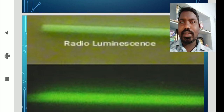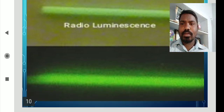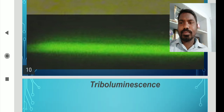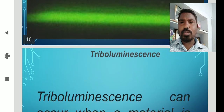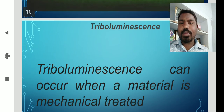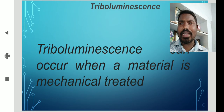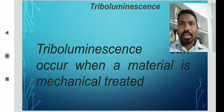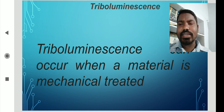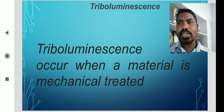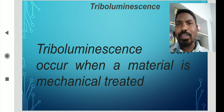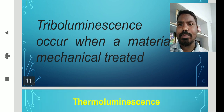Triboluminescence can occur when a material is mechanically stressed or fractured. When an object is mechanically stressed, it produces a certain type of luminescence, and that luminescence is called triboluminescence.